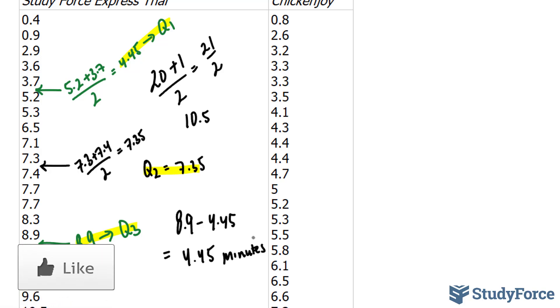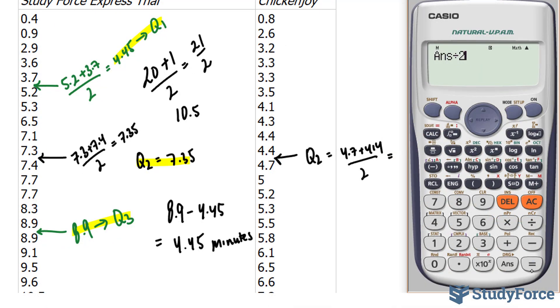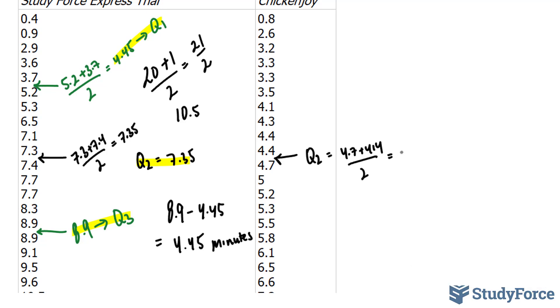We'll do the same thing now for Chicken and Joy. Now, Chicken and Joy also has 20 different wait times. So our Q2 will be between the 10th observation and the 11th. 1, 2, 3, 4, 5, 6, 7, 8, 9, 10. And that's the 11th observation. So we'll take the average. Q2 is equal to 4.7 plus 4.4 divided by 2. Using our calculator, dividing this by 2. And that gives us 4.55.